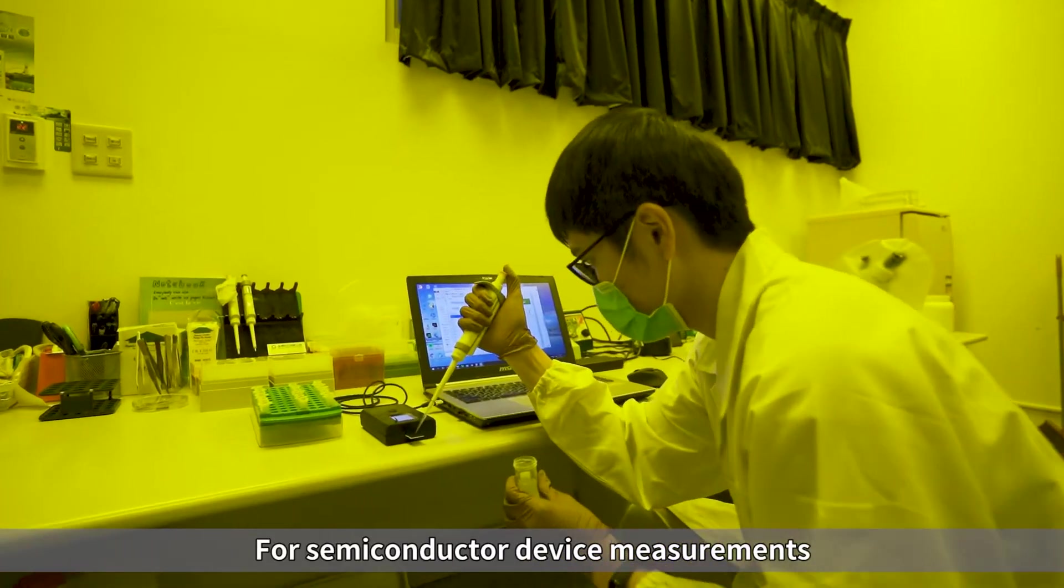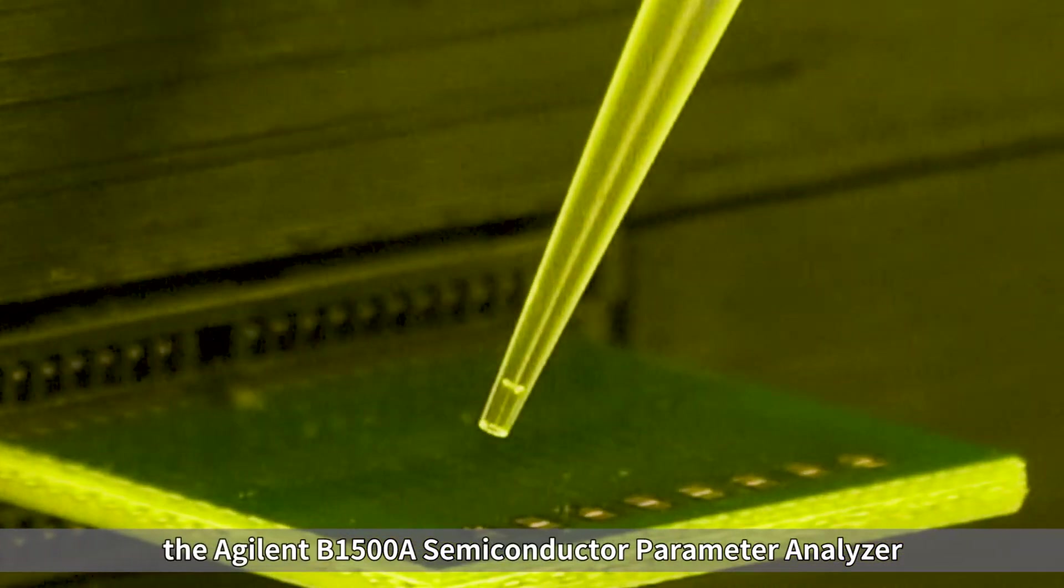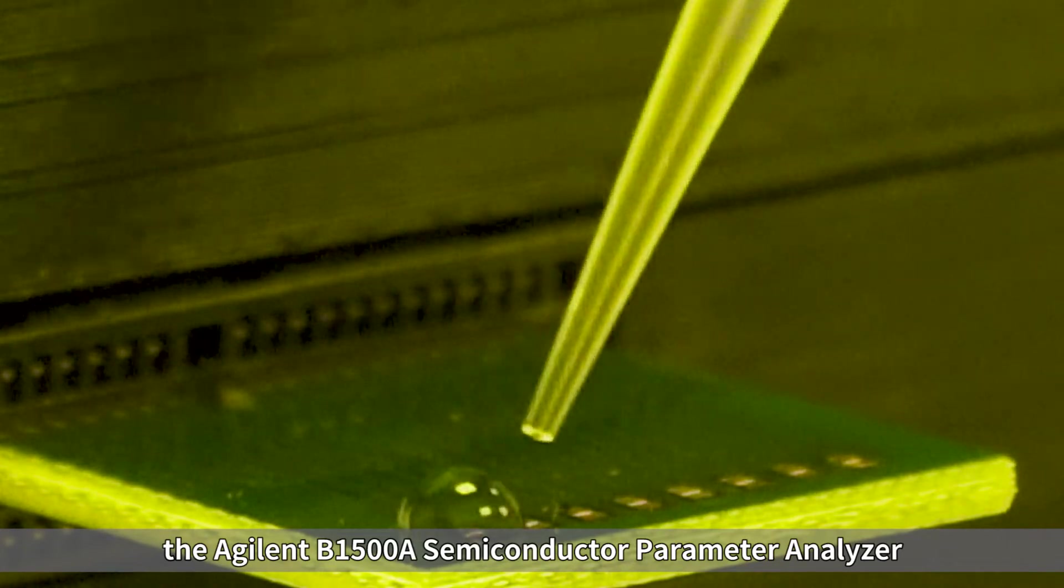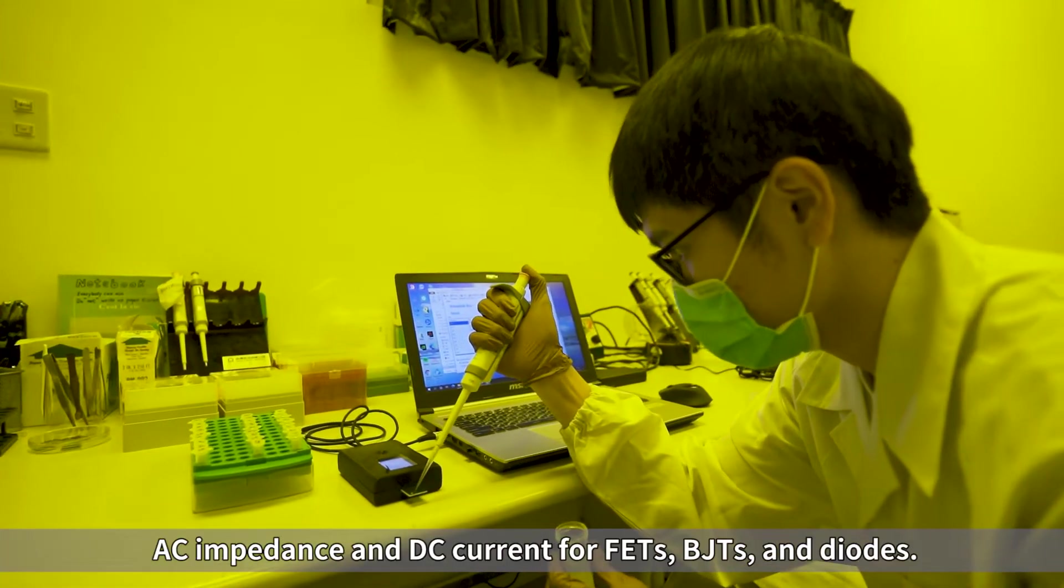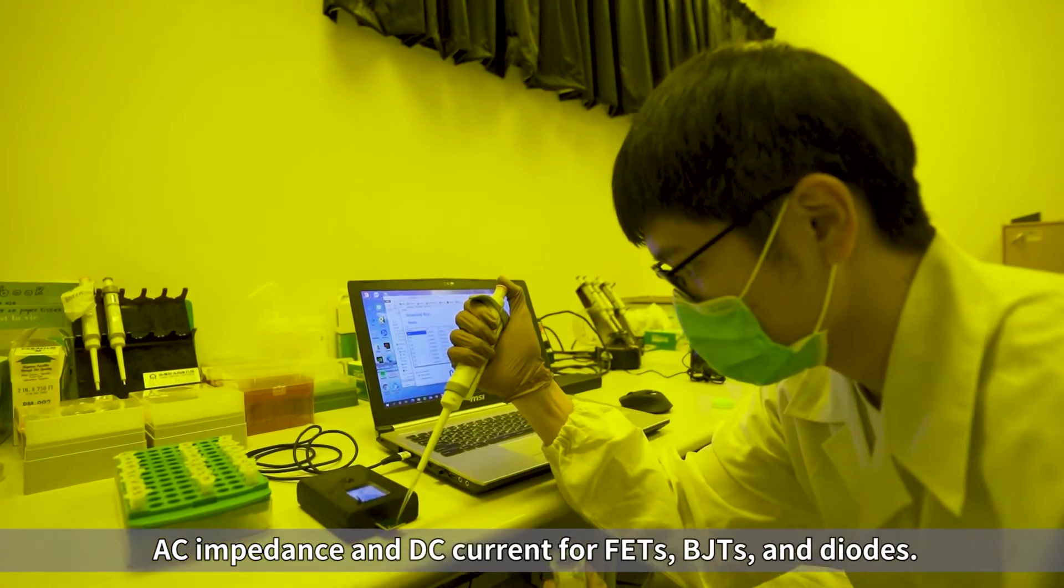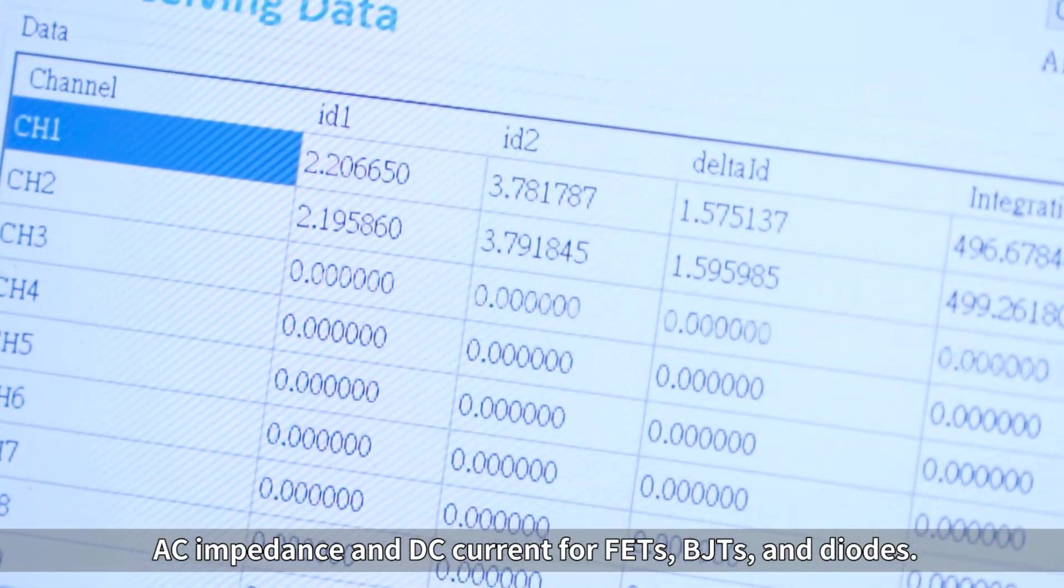For semiconductor device measurements, the Agilent B1500A Semiconductor Parameter Analyzer can measure the electrical signal like pulse, AC impedance and DC current for FETs, BJTs and diodes.